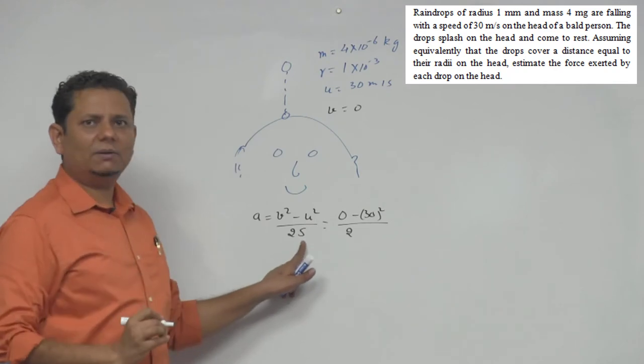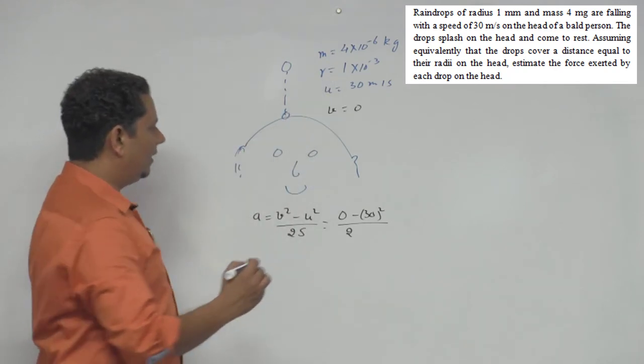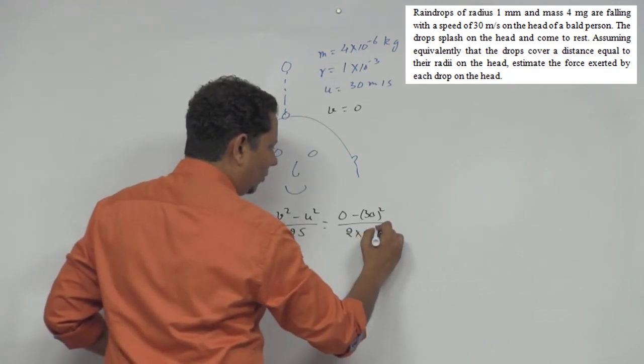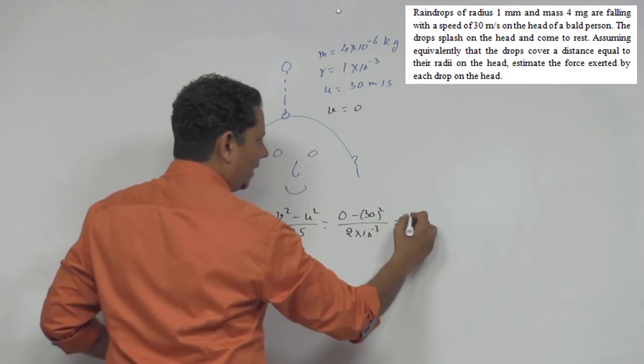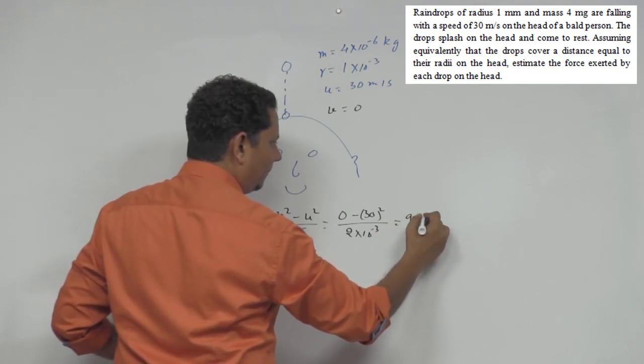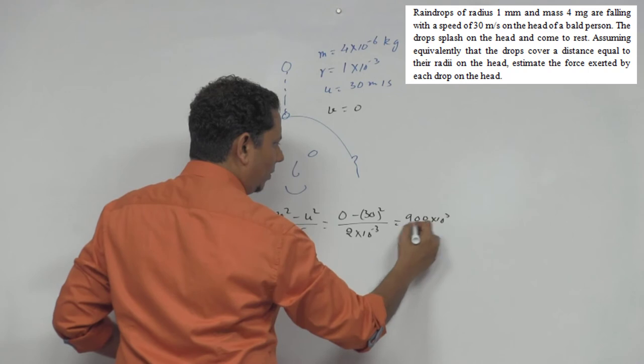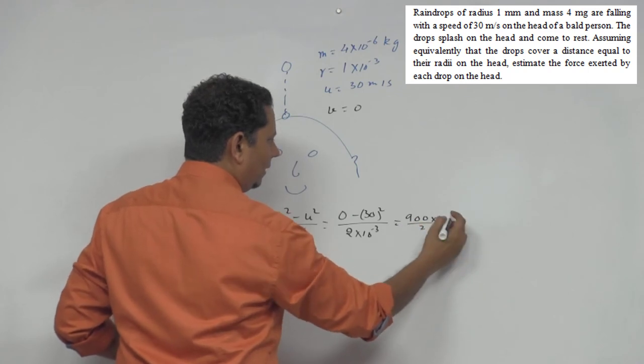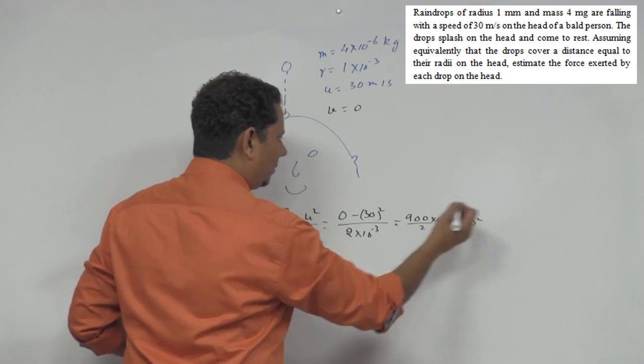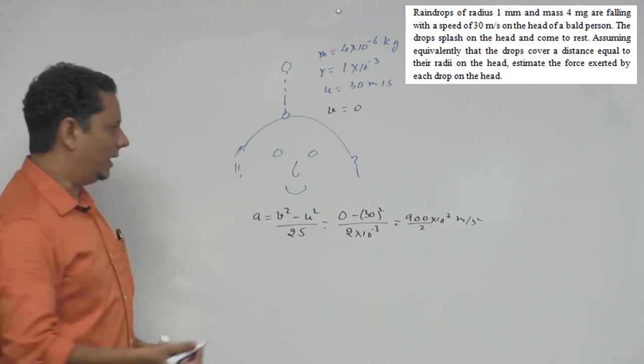Zero minus u², which is 30 squared, which is 900, divided by 2 multiplied by s. The distance traveled, we're told, is equivalent to 1 radius, so 10 to the power minus 3. So this value is 900 multiplied by 10 to the power 3 divided by 2 meter per second squared. This is your acceleration.